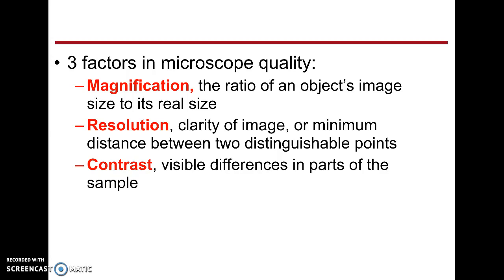We're going to talk about microscopes quickly. There are a couple of different kinds of microscopes that you might hear about in biology that are used to study cells. There are three things that we look for when evaluating how well a microscope is going to allow us to see cells. The first one, which is the most obvious, is magnification.